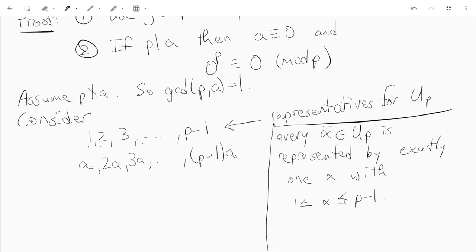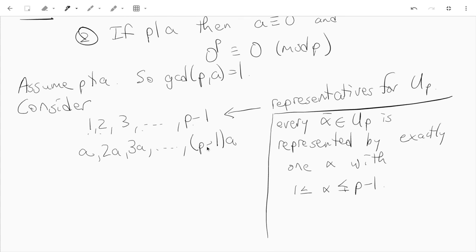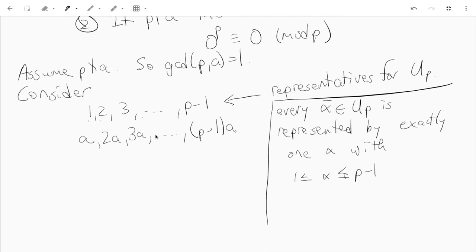But the claim is that the second row is also a complete set of representatives for Uₚ. So it has the same property. And to show this, notice that none of these are divisible by p. So let's consider this sequence. So p does not divide a, 2a, 3a, all the way up to (p-1)a, because p doesn't divide a and p doesn't divide 1 up to p-1.